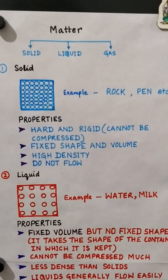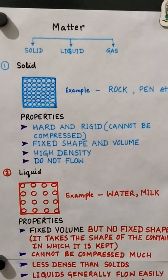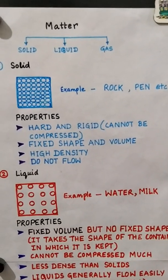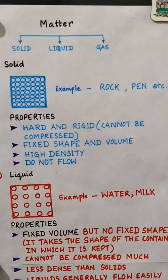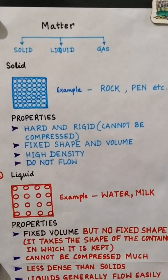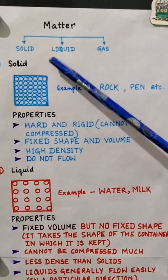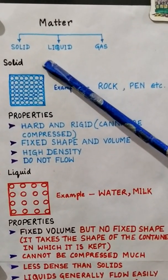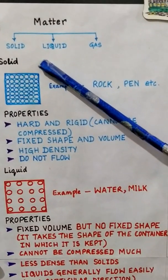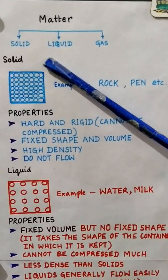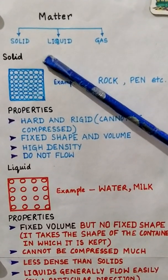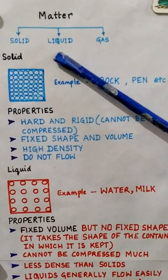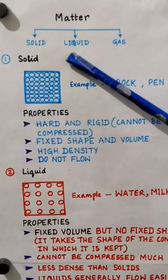Good morning students. Once again I am here to take your chemistry class. Last lecture we discussed about matter. Today we will discuss its classification on the basis of its physical properties, i.e. solid, liquid and gas. Matter exists in 3 different states and so its properties also vary accordingly. Let us start with the first state of matter, i.e. solid.